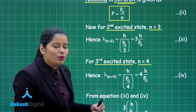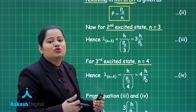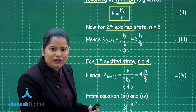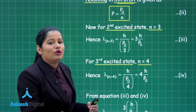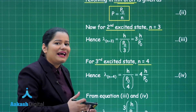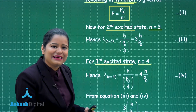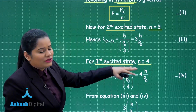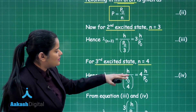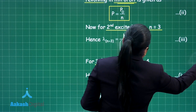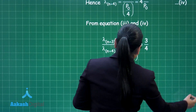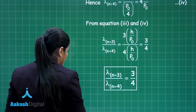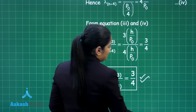In the question, we have been asked to find the ratio of the de Broglie wavelength of the electron for the second and the third excited state. When we divide these two, we get the final result as 3 by 4. So this is the final result.